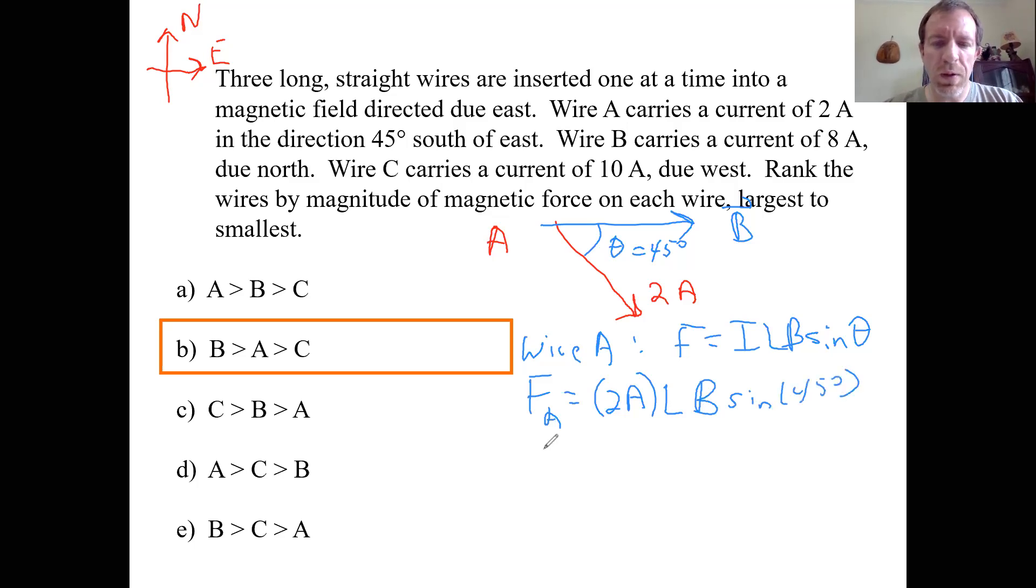So for wire A, if we were calculating this force, F is equal to ILB sine theta. It says here that, or we have to assume here that our wires are all the same length. It doesn't really make sense to compare them otherwise. But the force due to, the force on A, now let's plug in what we have. We've got two amps times the length of A, which again, we're going to assume that all the wires are the same size, times the magnetic field strength B, which we don't know, times the sine of 45 degrees. All right. And then if we plug into our calculator, we can get the result that sine of 45 is 0.717. So this ends up giving us the result 1.414 LB would be the size of my force on wire A.